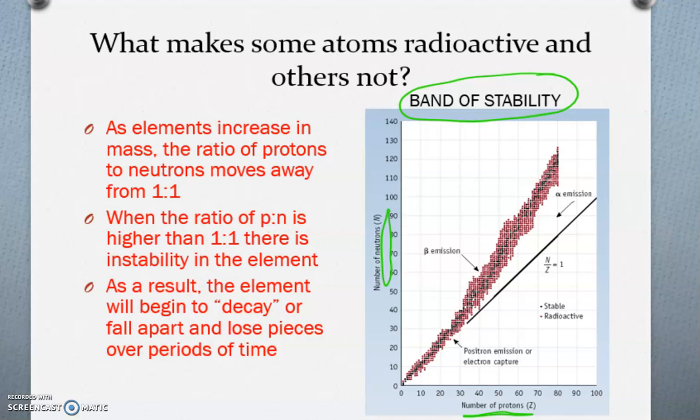So this chart is really awesome because you'll also notice the different types of beta, alpha emission, positron emission, or electron capture.